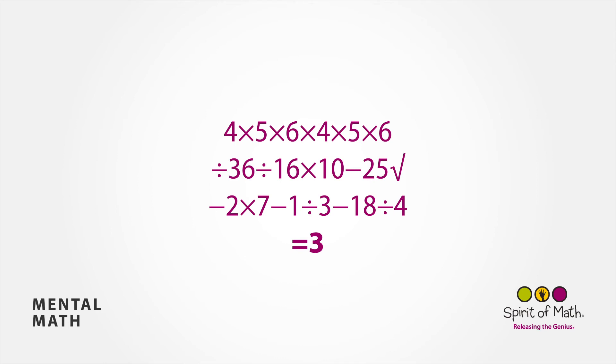Alright, take a look at the beginning of this equation. Notice it has 4 times 5 times 6, then 4 times 5 times 6 again. And right after that, it says divided by 36. Well, that takes out those 6 times 6's.